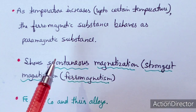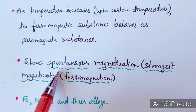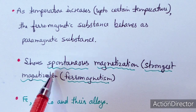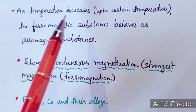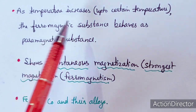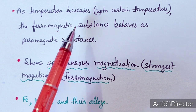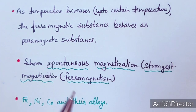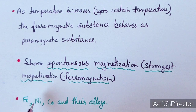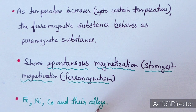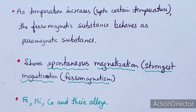When the temperature of the substance increases past a particular temperature, it becomes a paramagnetic substance. Metals such as Fe, Nickel, Cobalt, and their alloys show ferromagnetic behavior.